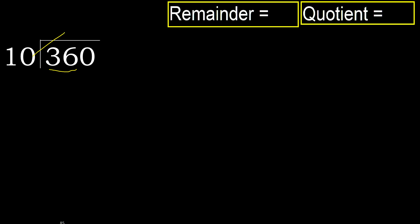10 — multiply by which number is nearest to 36 but not greater. 10 multiply by 4 is 40. 40 is greater. Multiply by 3: 30 is not greater.